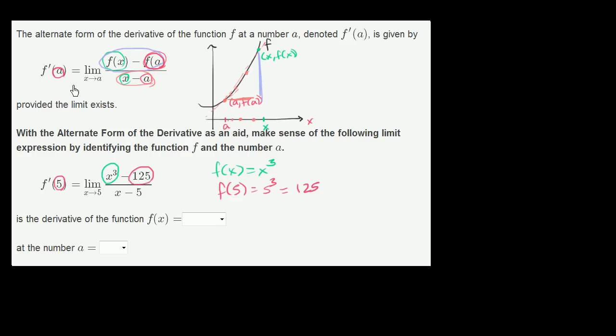And we're also taking the limit as x approaches a. Here, we're taking the limit as x approaches 5. So this is the derivative of the function f of x is equal to x to the third at the number a is equal to 5.